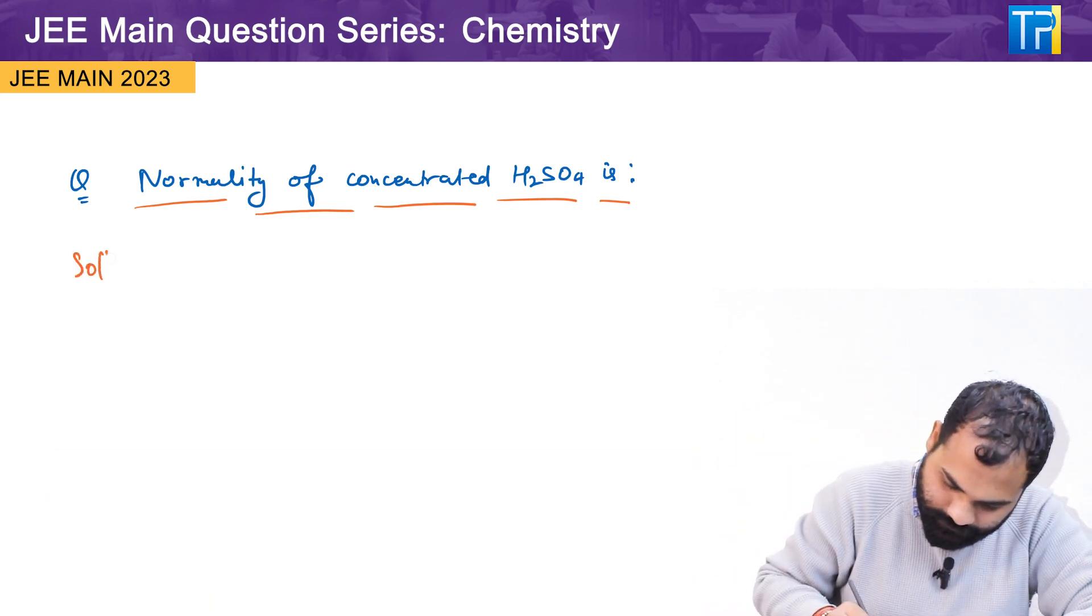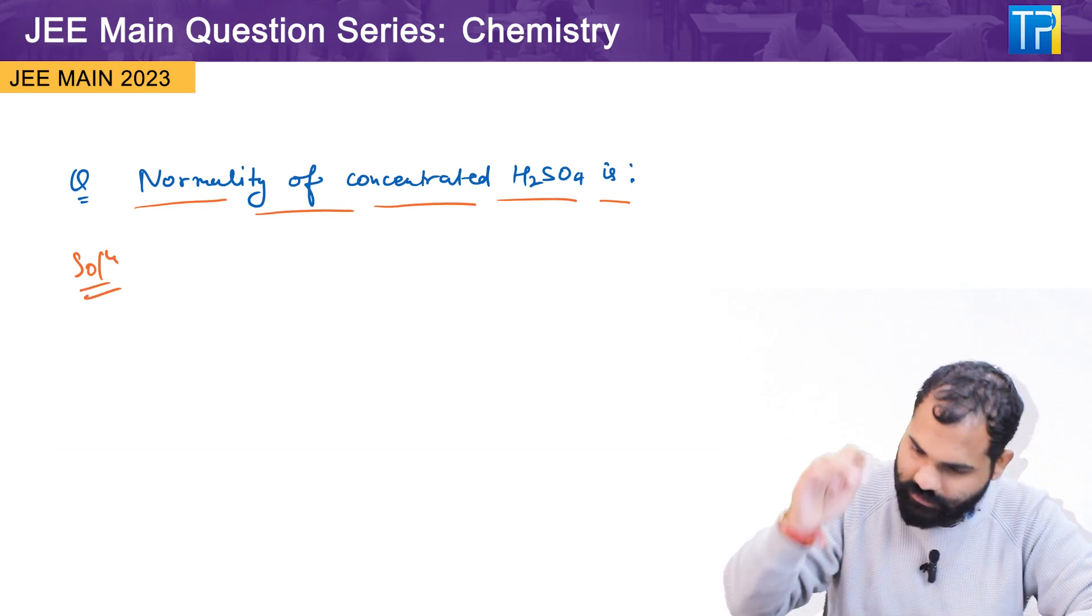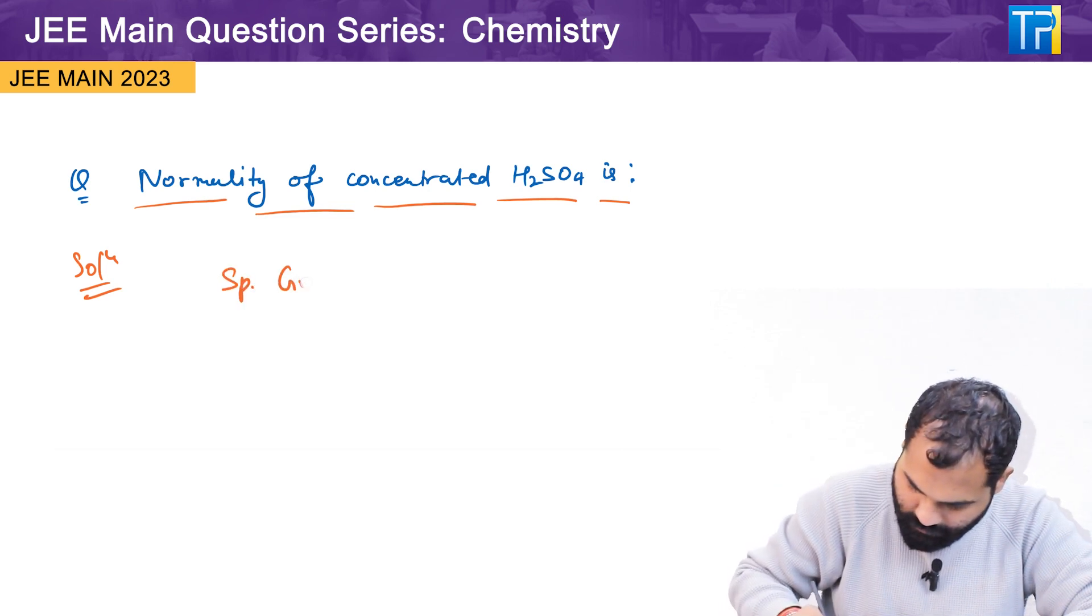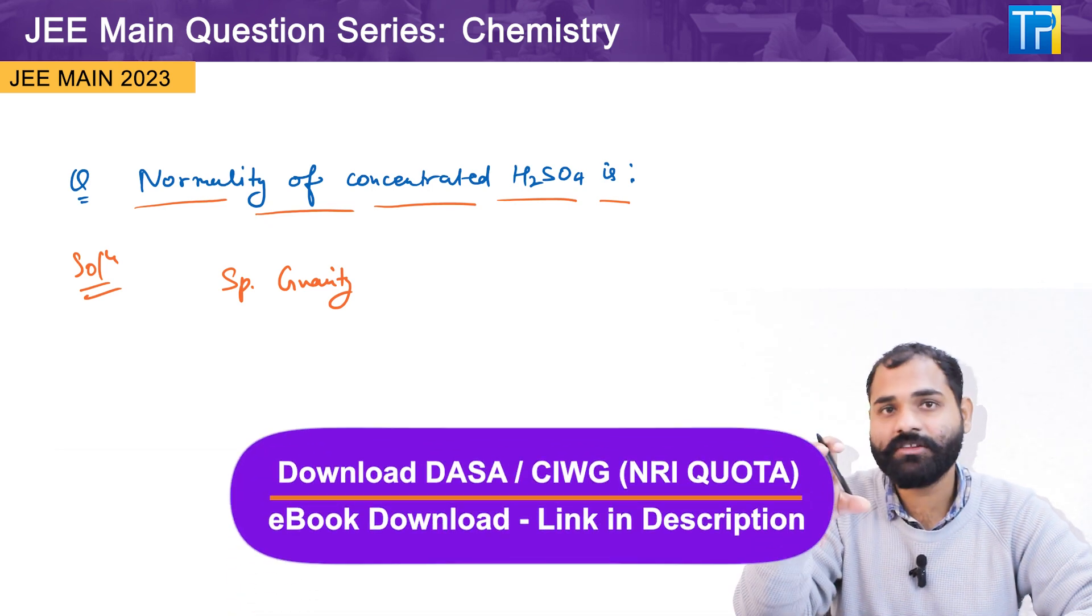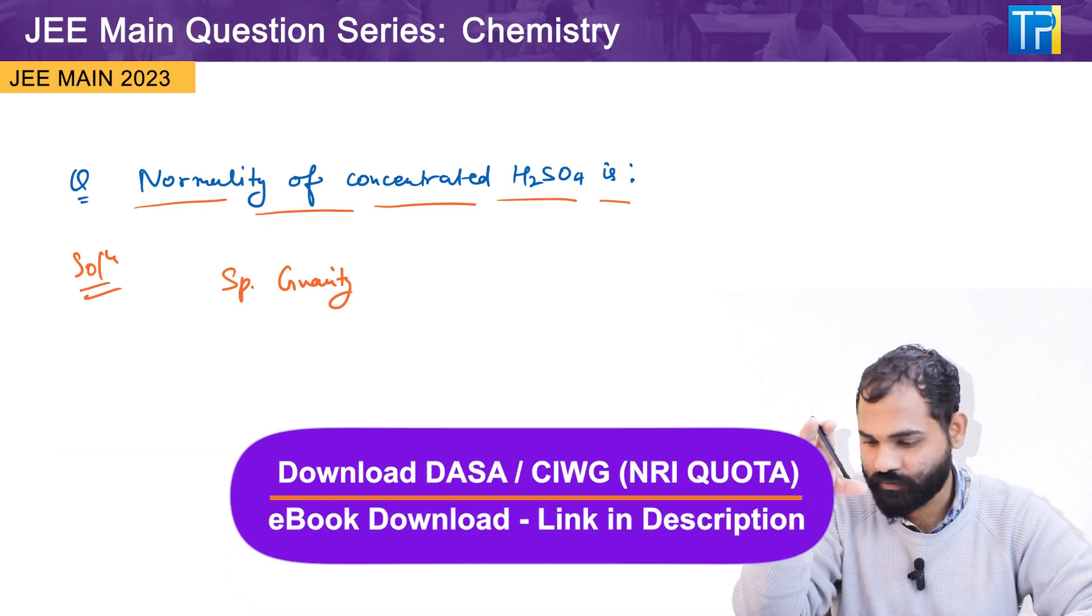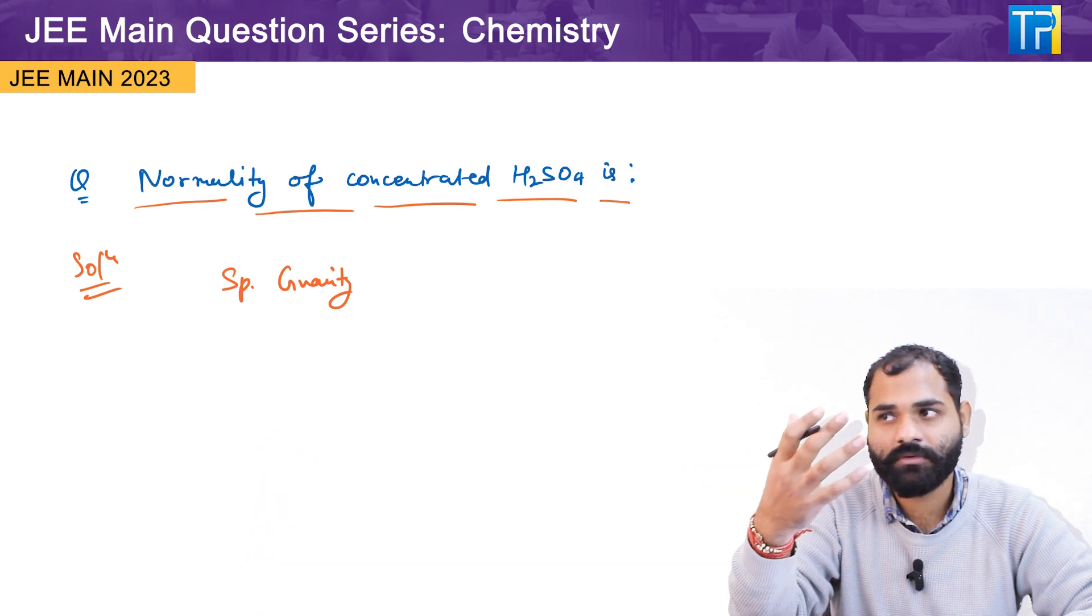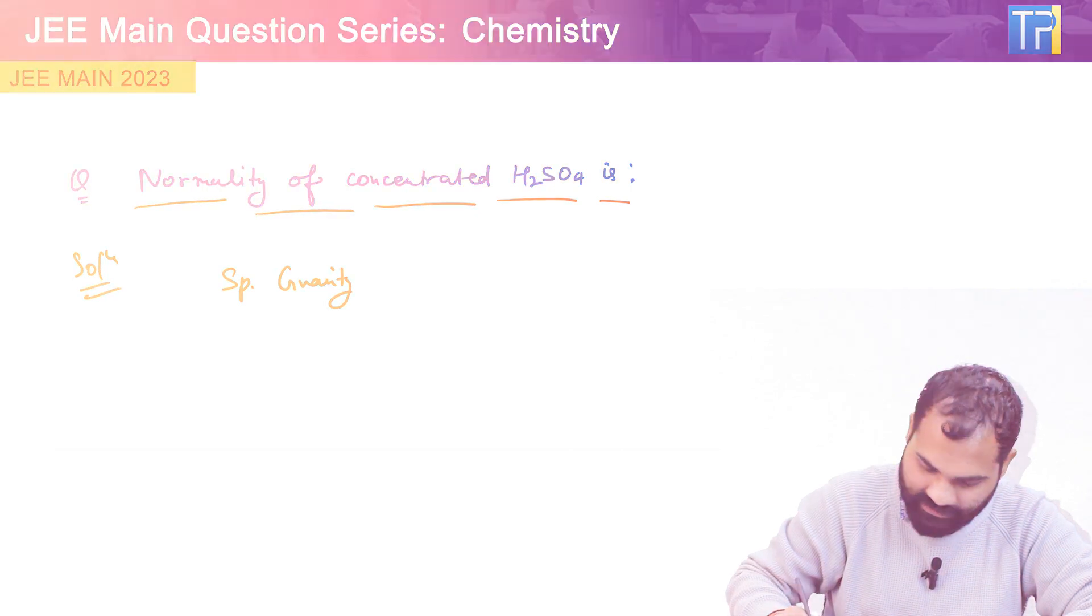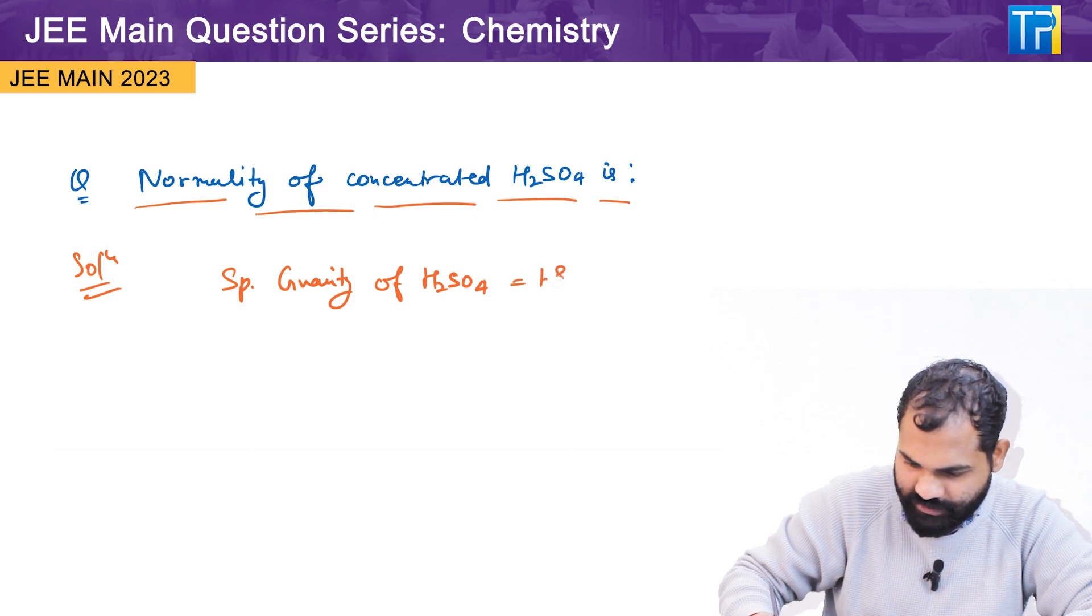So we will start. While you are finding the normality of a chemical compound, you will require some quantities or values like the specific gravity value, which is 1.84.